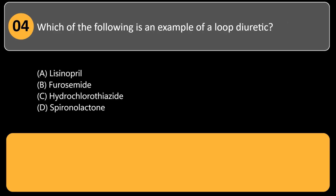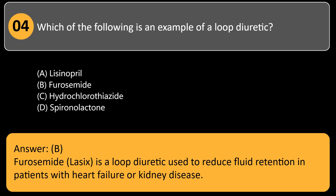Which of the following is an example of a loop diuretic? A) lisinopril, B) furosemide, C) hydrochlorothiazide, D) spironolactone. Answer: B. Furosemide (Lasix) is a loop diuretic used to reduce fluid retention in patients with heart failure or kidney disease.